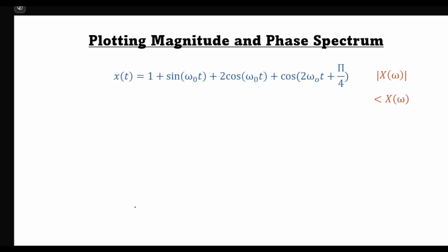Hello and welcome to T Academy. In today's lecture we'll be learning how to plot the magnitude and phase spectrum of a given time domain signal. x(t) is given as 1 plus sine(ω₀t) plus 2cos(ω₀t) plus cos(2ω₀t + π/4), and we are interested in plotting the magnitude and phase of this signal in the frequency domain.